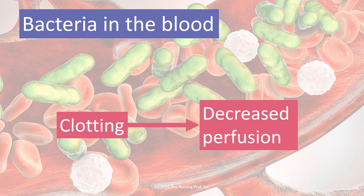The third component of the inflammatory process is clotting, which is going to cause decreased perfusion by clotting off some of those small vessels. So we've talked about how this happens in the hand and how it's happening throughout the bloodstream and the whole body.